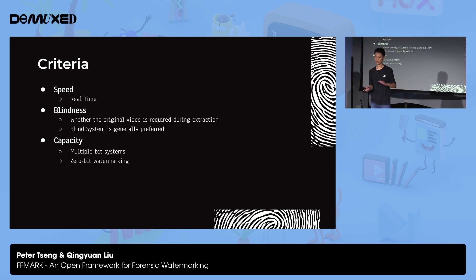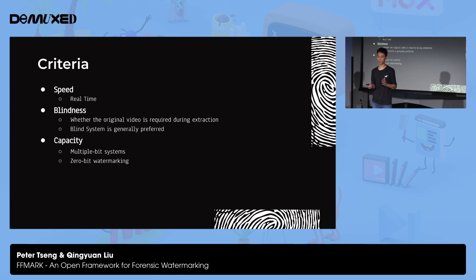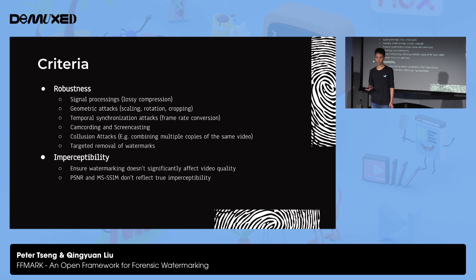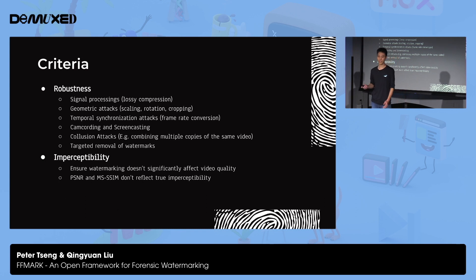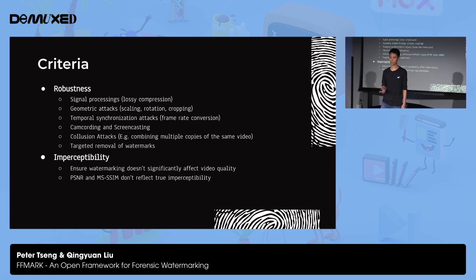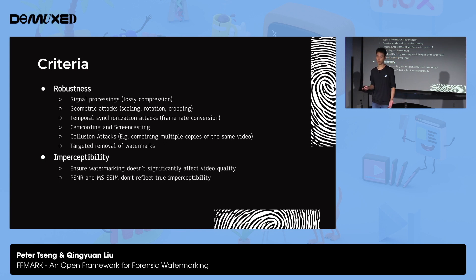Generally, we have to embed a payload that contains multiple bits — that's a multi-bit system. There is also another kind called a zero-bit watermarking system, where we don't embed a watermark containing several bits; instead, we just detect whether the watermarked video contains a specific payload or not. Out of all the criteria, the most important two are robustness and imperceptibility. By robustness, we have to make sure our watermark is robust against video transcoding and malicious attacks from pirates — for example, against lossy compression, scaling, rotation, cropping, and frame rate conversion, since a pirate might do frame insertion or frame dropping.